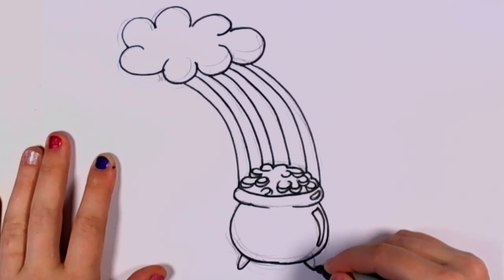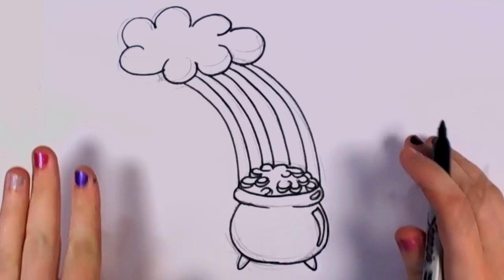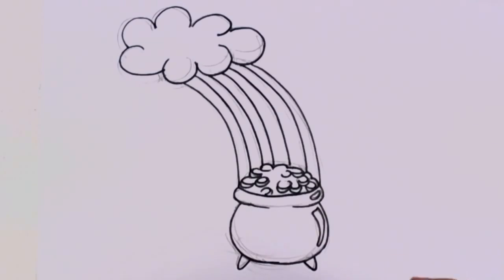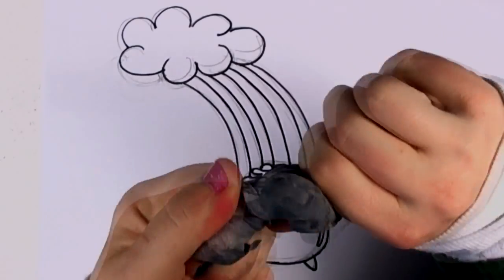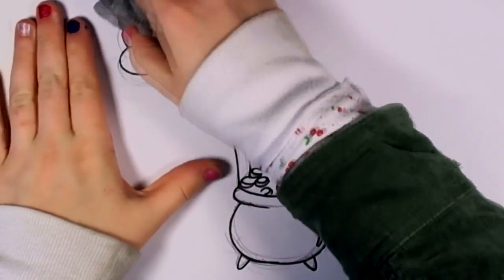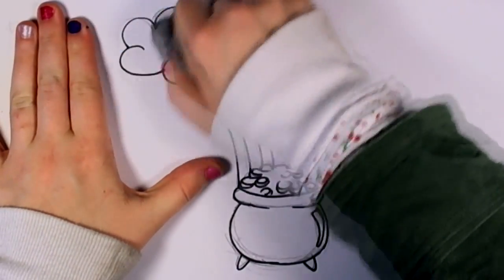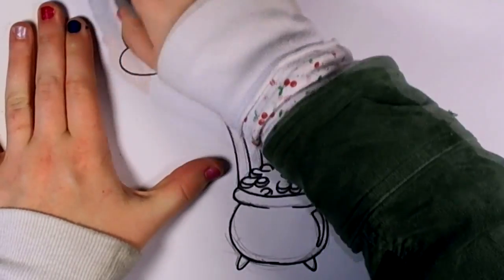So I'm done outlining. I'm ready to erase all the pencil lines. Use that lovely, stretchy, kneaded eraser, or what my mom always called it, gum eraser. It does kind of look like gum, just you don't want to chew it, obviously.